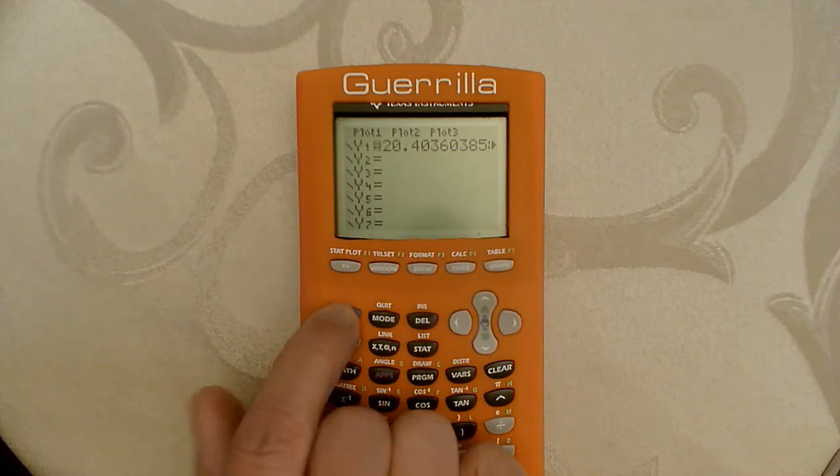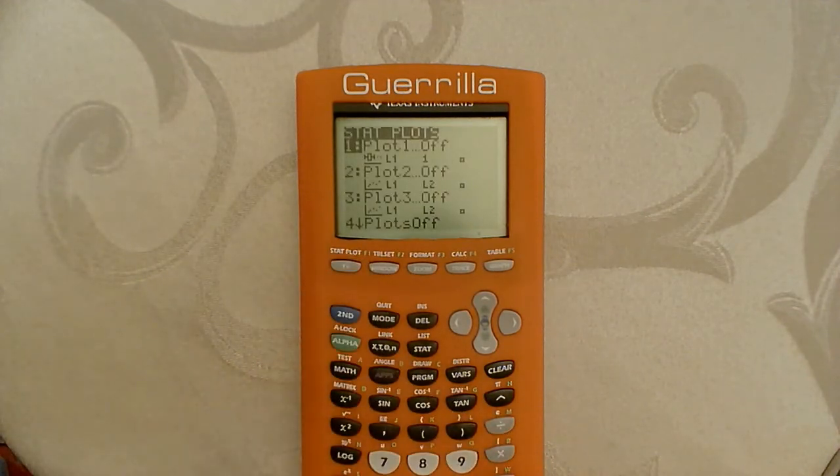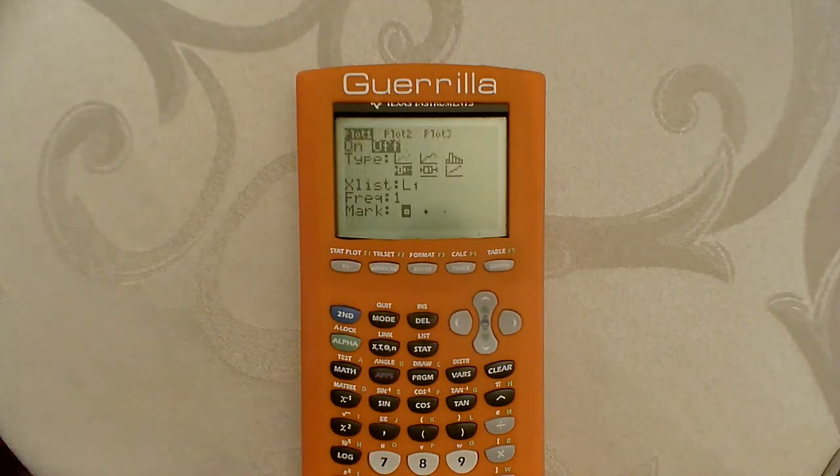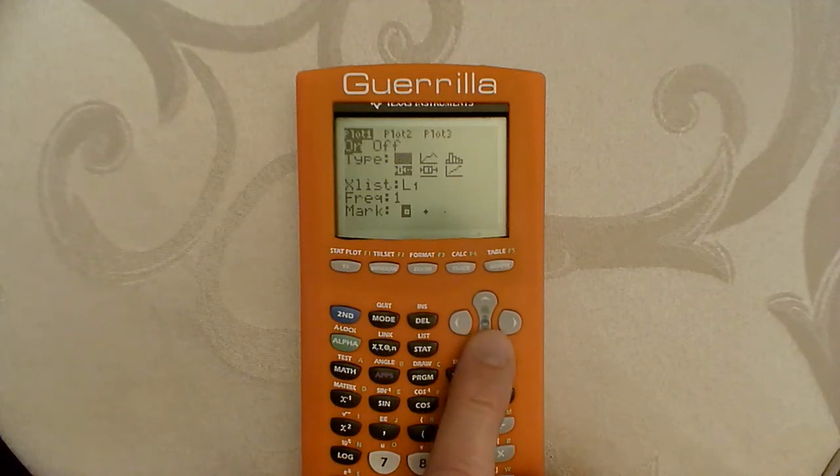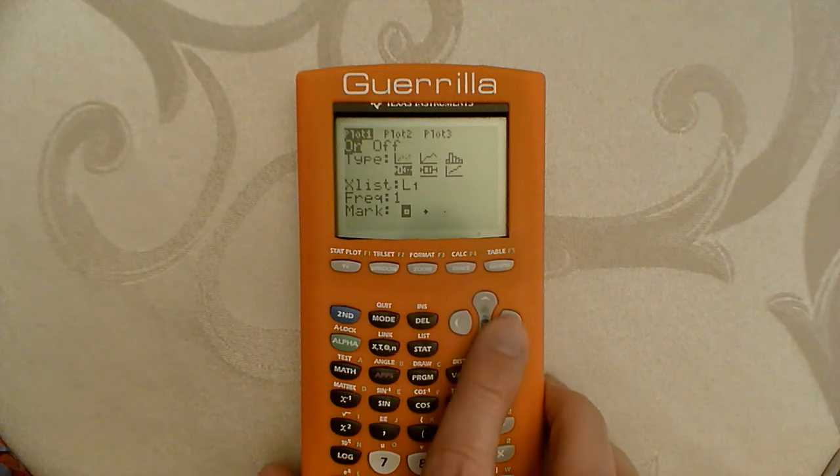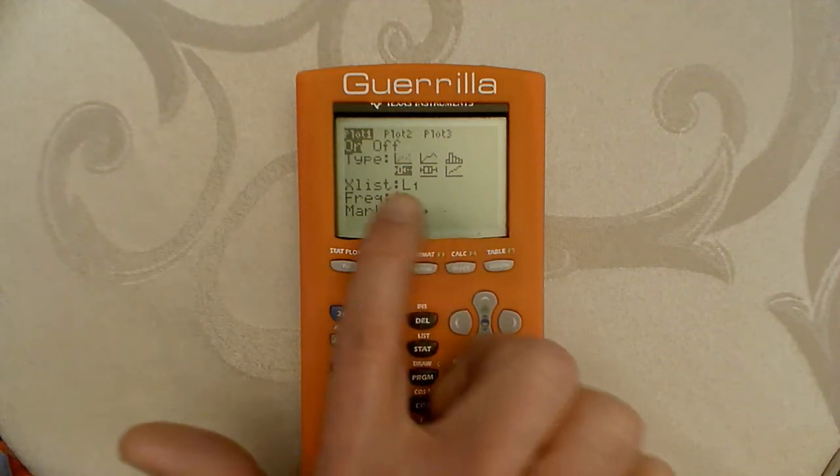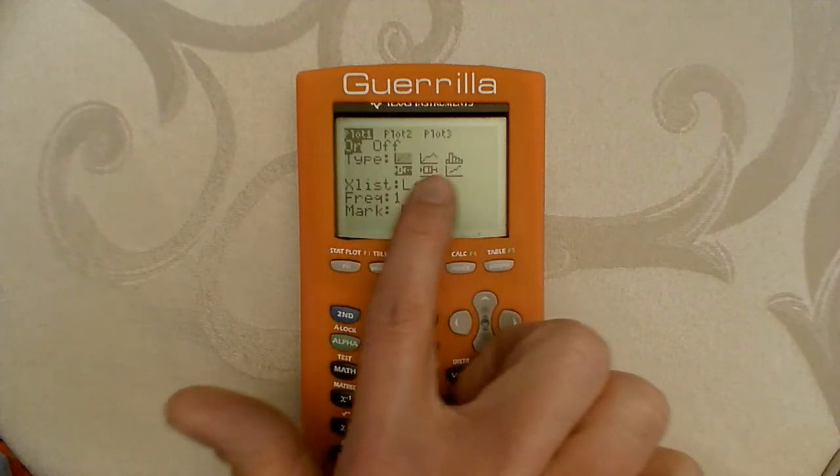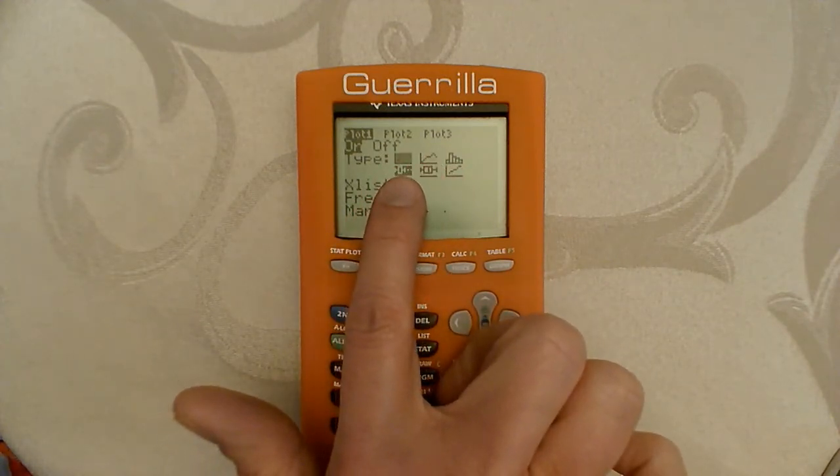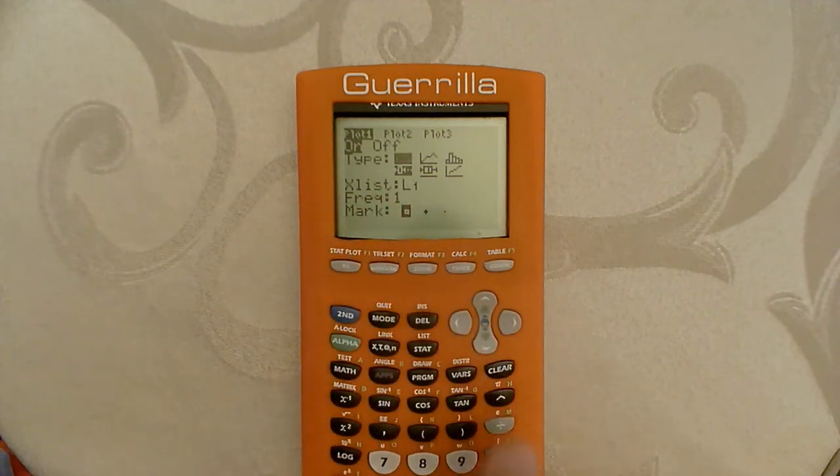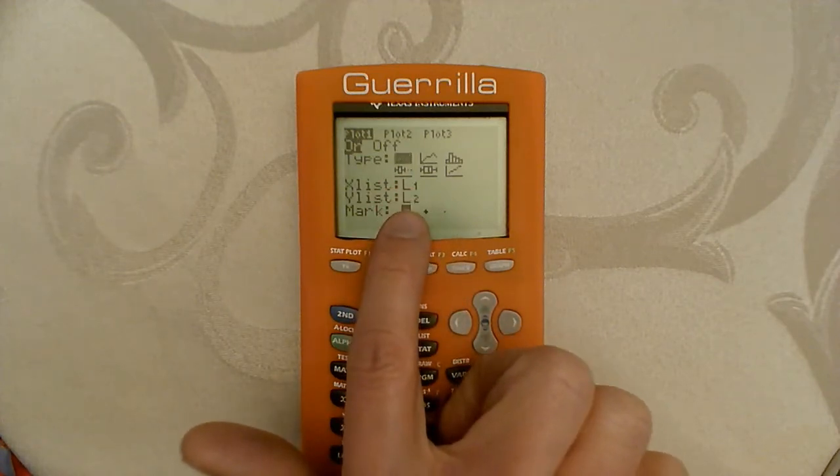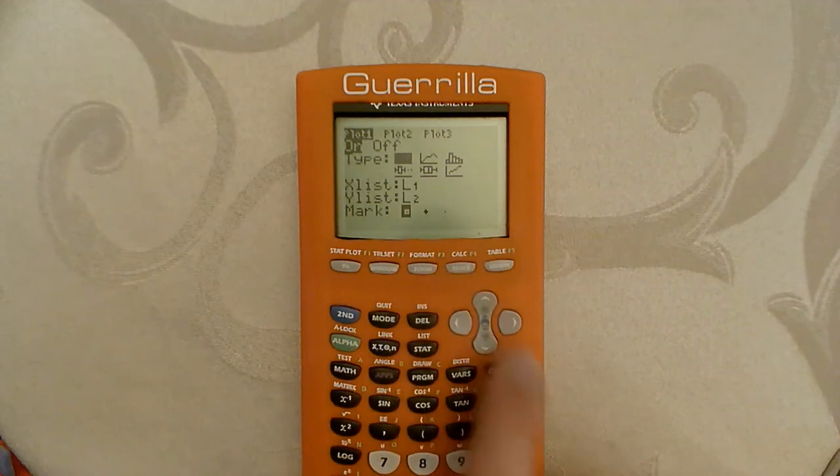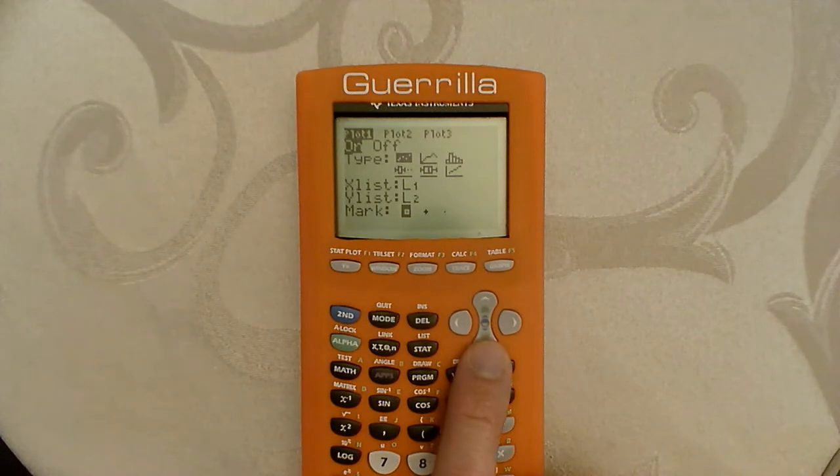So now let's hit second, y equals, and that takes us to our plots. Select plot one. Now you can see plot one is off right now, we want to select on, and then we want to cursor down to our graphs. And I notice right now the graph that's highlighted is a modified box plot. The values down below are going to change based on what kind of graph I chose. But when I select scatter plot, those values change. I'm now looking for two lists, the explanatory and response variables, the x data and the y data. So that looks good, and my scatter plot dots, my points, will show up as these little donuts.